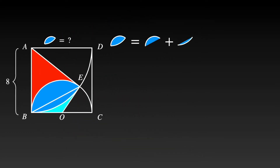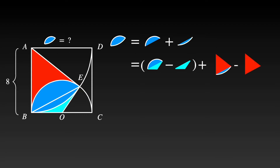The blue shape can be divided into two parts. The bigger part of the blue shape is equal to a sector subtracts the green triangle, and the smaller one is equal to another sector subtracts the red triangle. So the question is how to get the areas of the sectors and triangles.